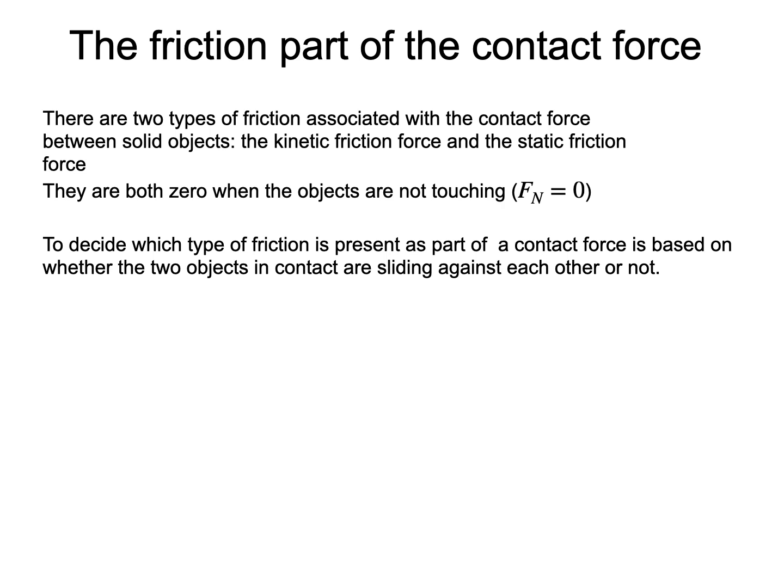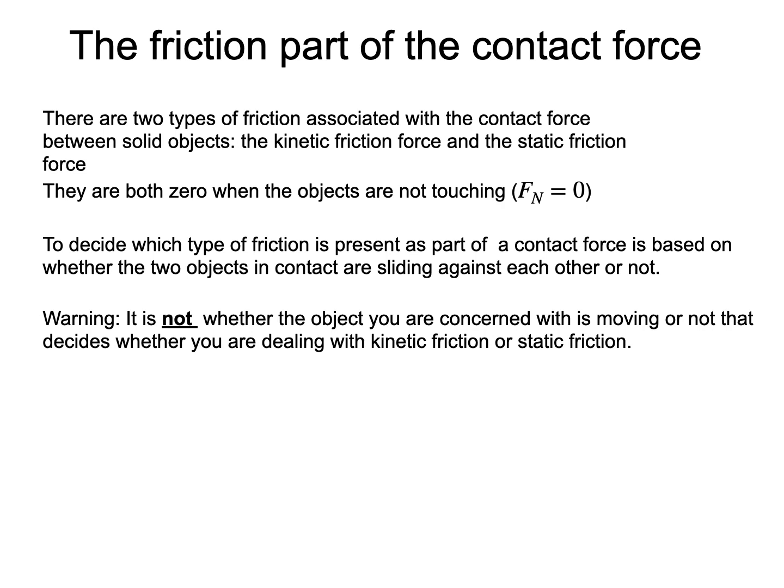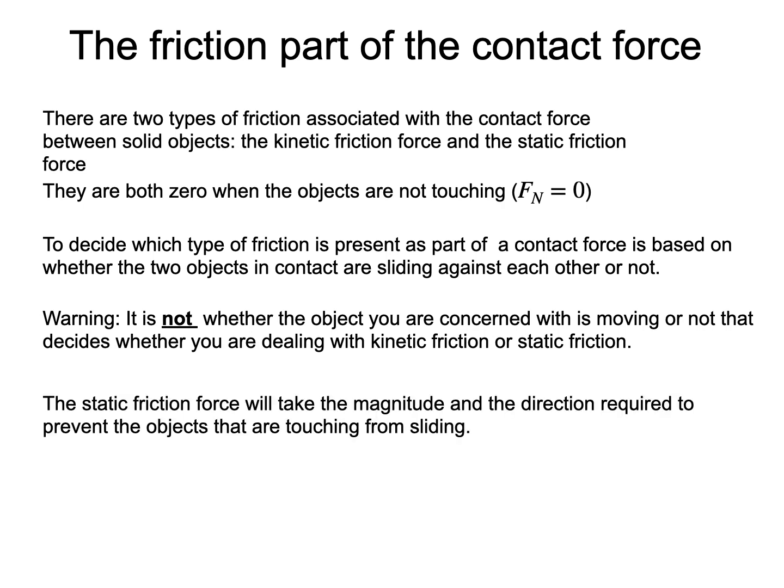A word of warning. Some introductory textbooks base the difference between the two types of friction forces on whether the object you are interested in is moving or not. This is misleading. In cases of static friction, the objects are not sliding against each other. The static friction force takes the magnitude and direction necessary to prevent the sliding. The kinetic friction force appears when the objects are sliding against each other, and the direction of the friction force will be in opposition to the sliding.